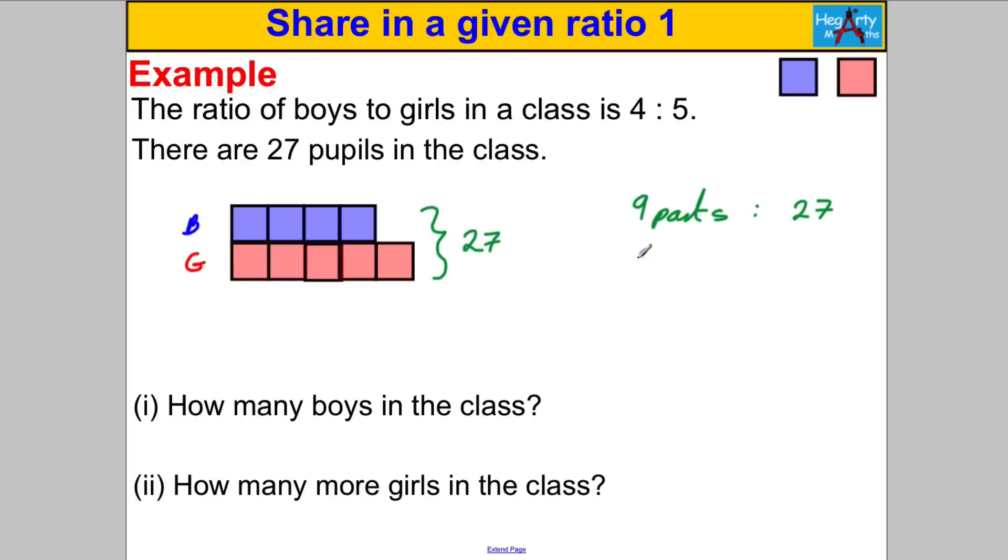So what you can say is 9 parts must be worth 27. So one part, well you must do 27 divided by 9, which is 3. That tells you that each part or each box is worth 3. So then you can go back to your diagram and you can fill in 3 in each box, and now any question that anyone can ask you about this particular scenario you can answer.